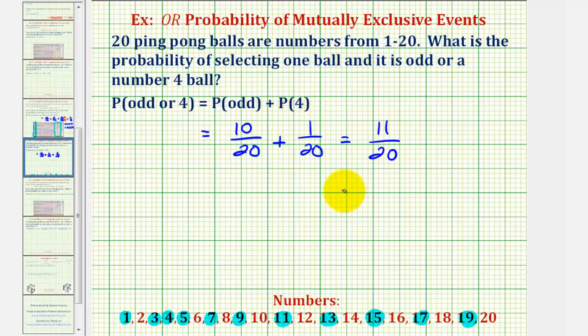Eleven divided by twenty is equal to zero point five five, which is also equal to fifty-five percent.